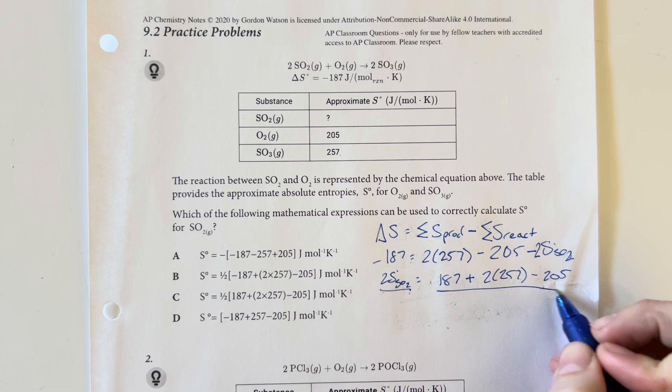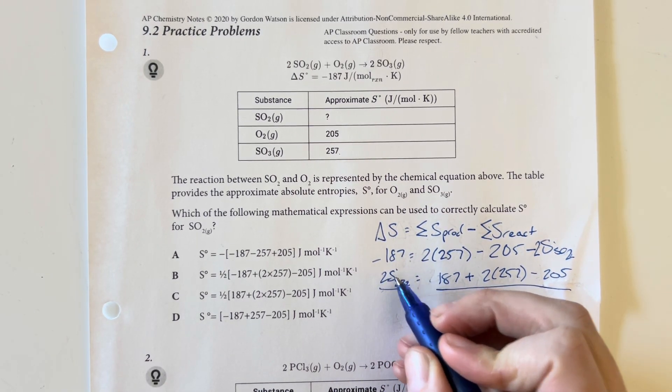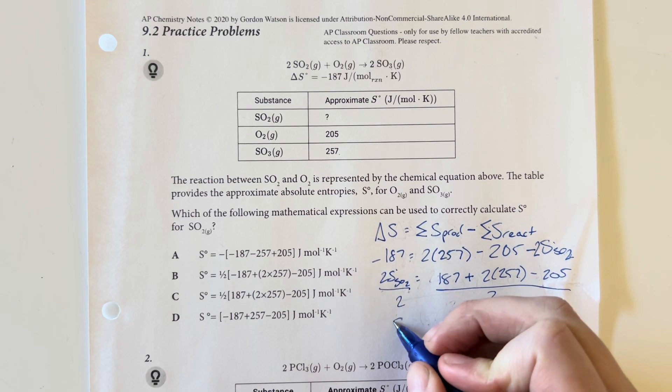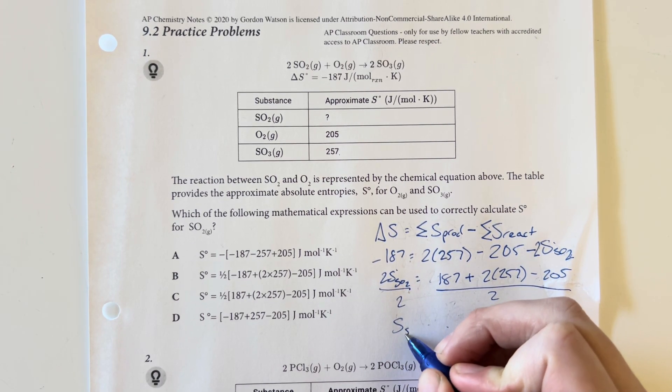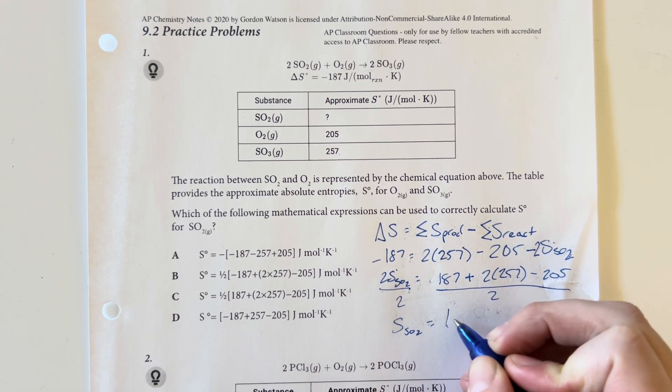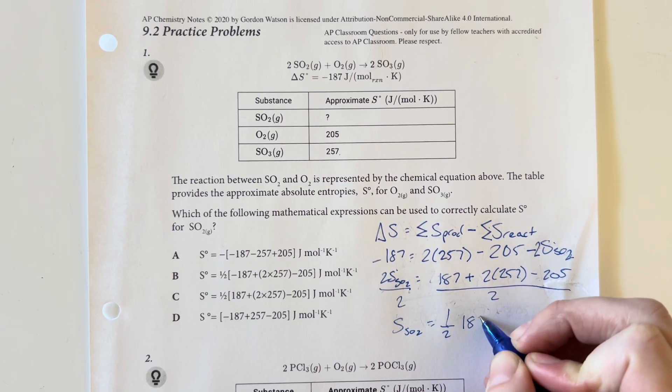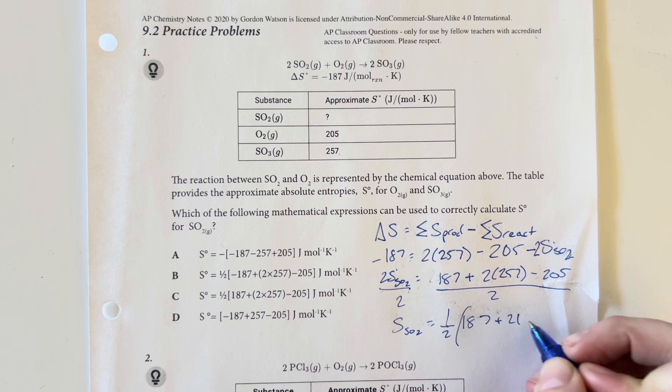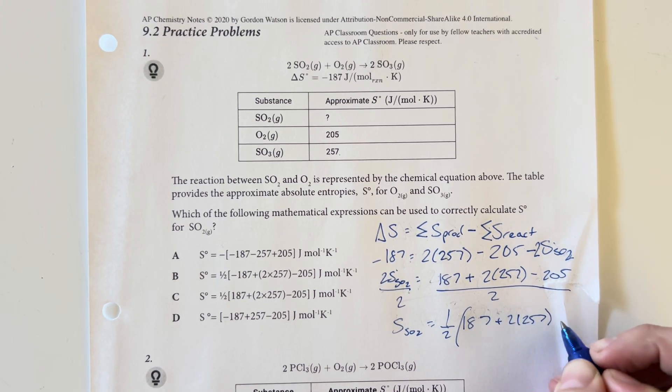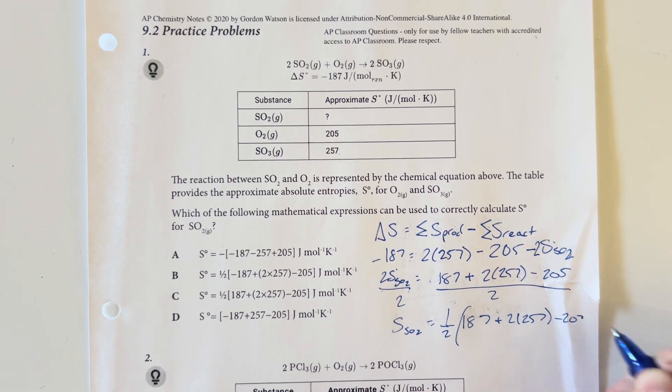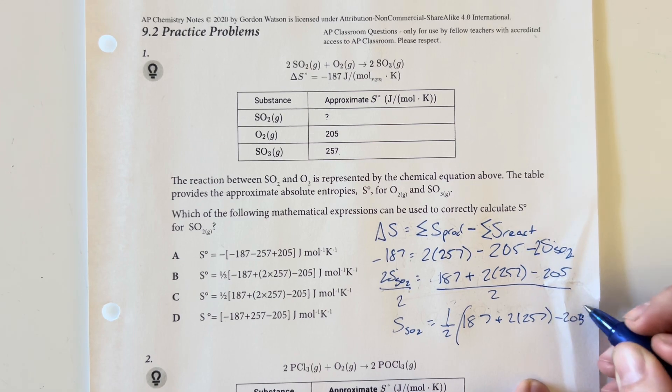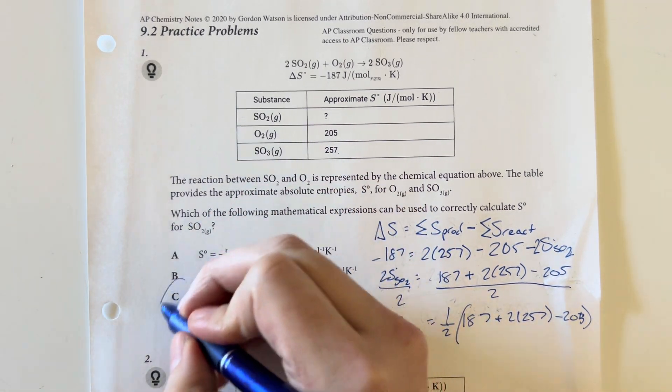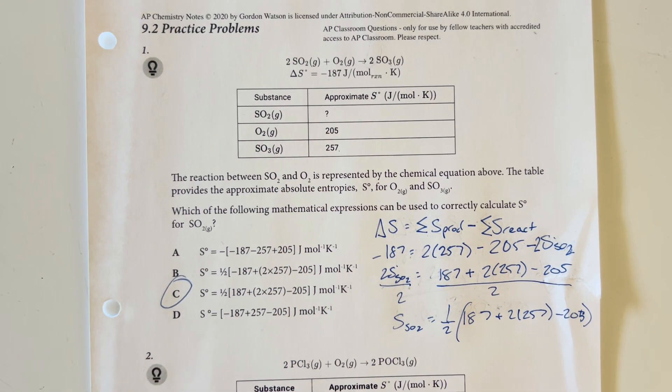It is all being multiplied by 2 currently, so we'll divide both sides by 2. The entropy for SO2 is going to be equal to 1/2 times (187 plus 2 times 257 minus 205). That matches option choice C. So that is going to be my answer choice.